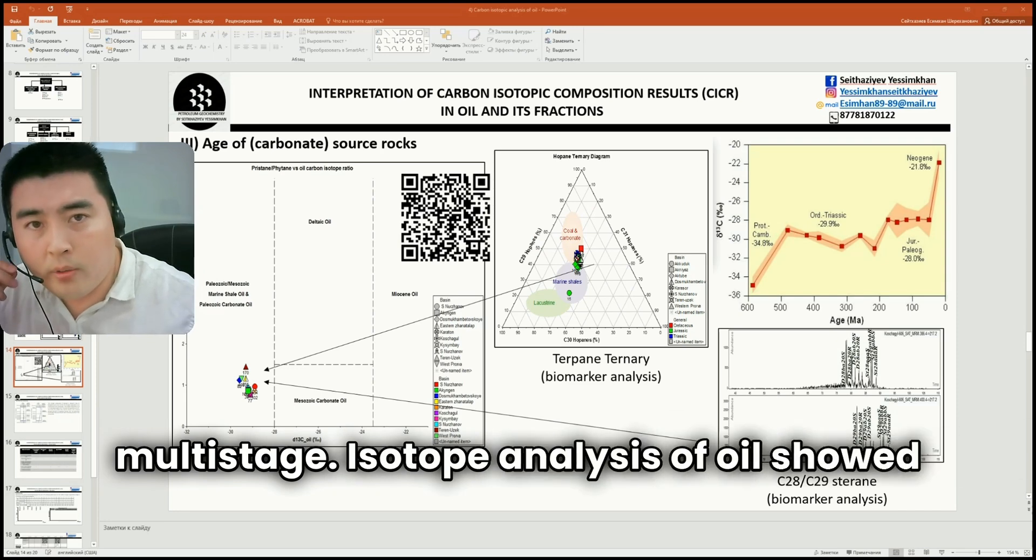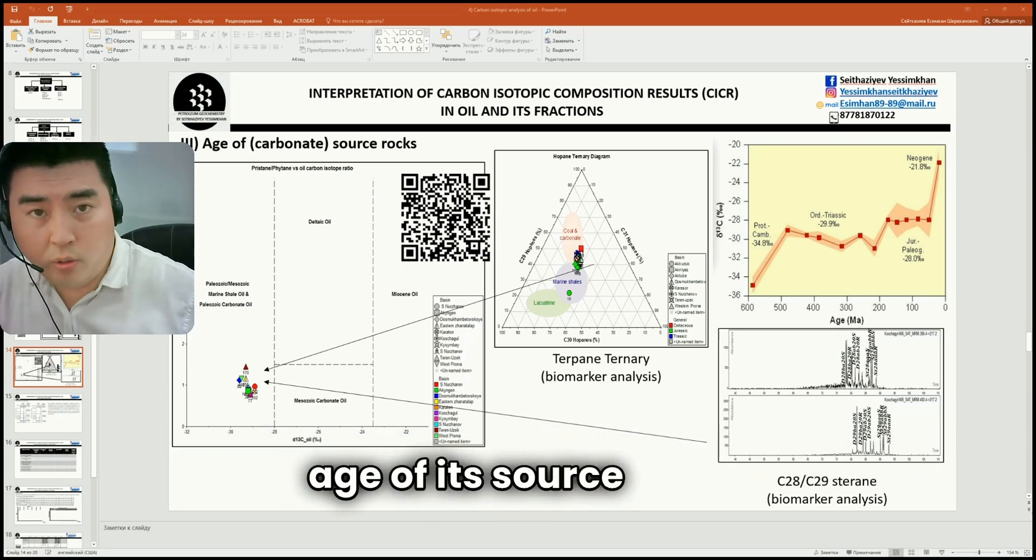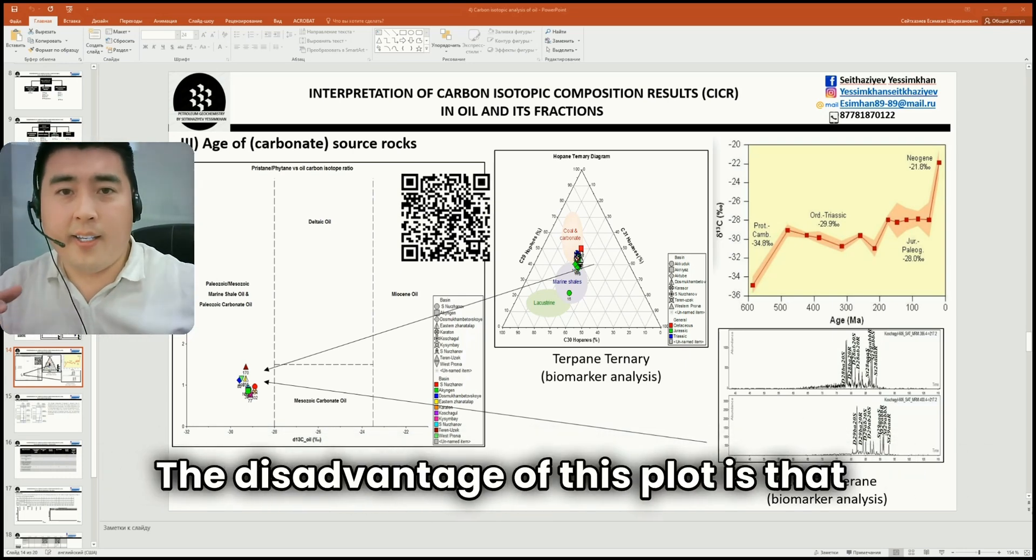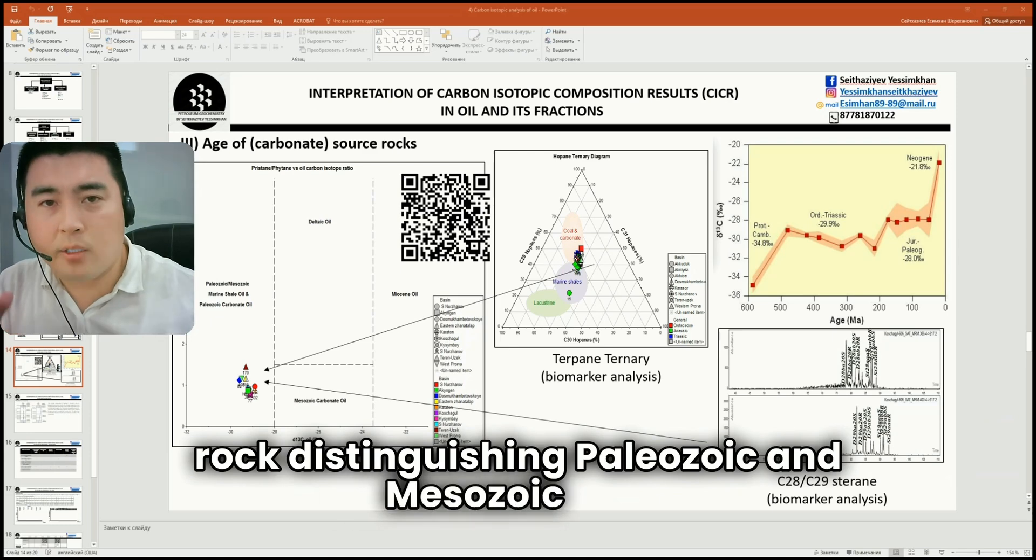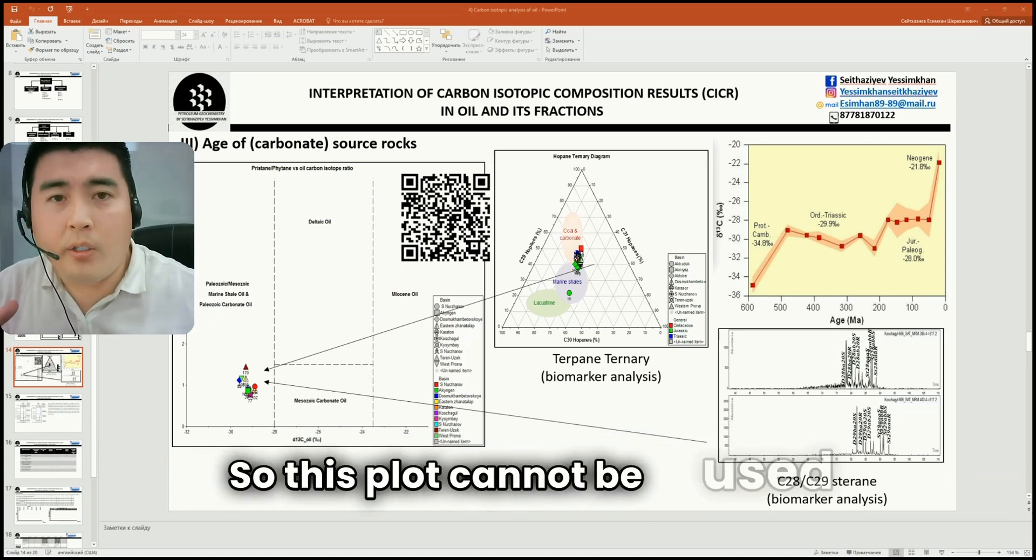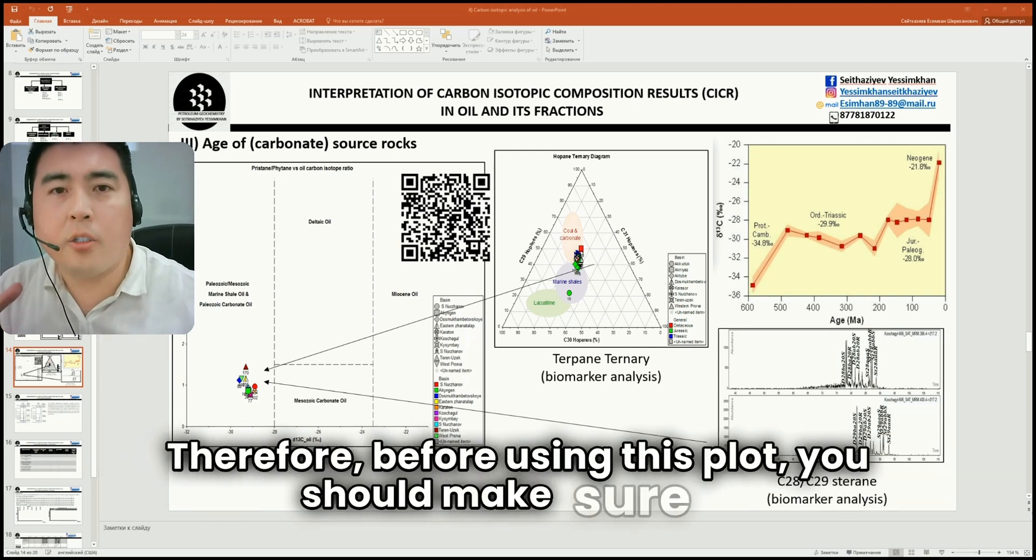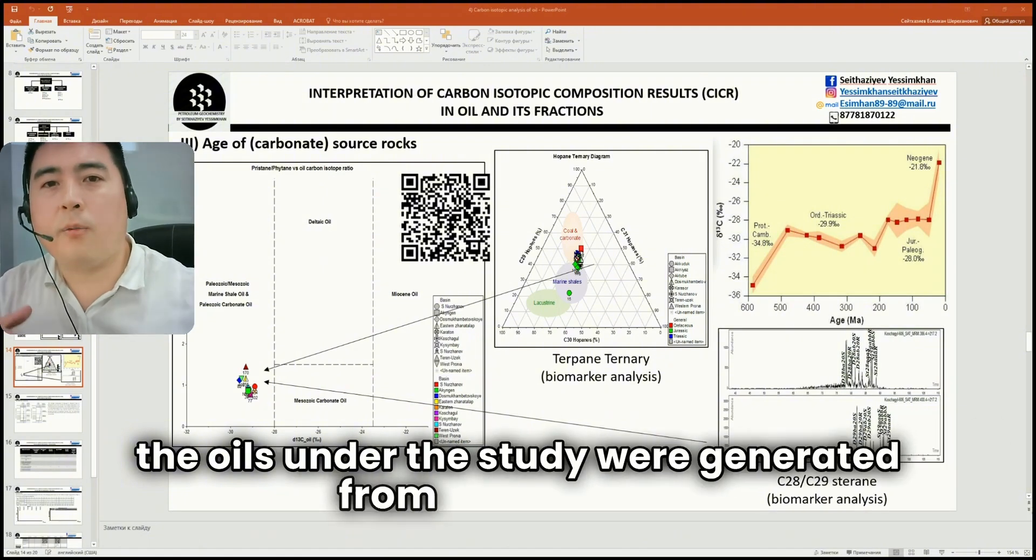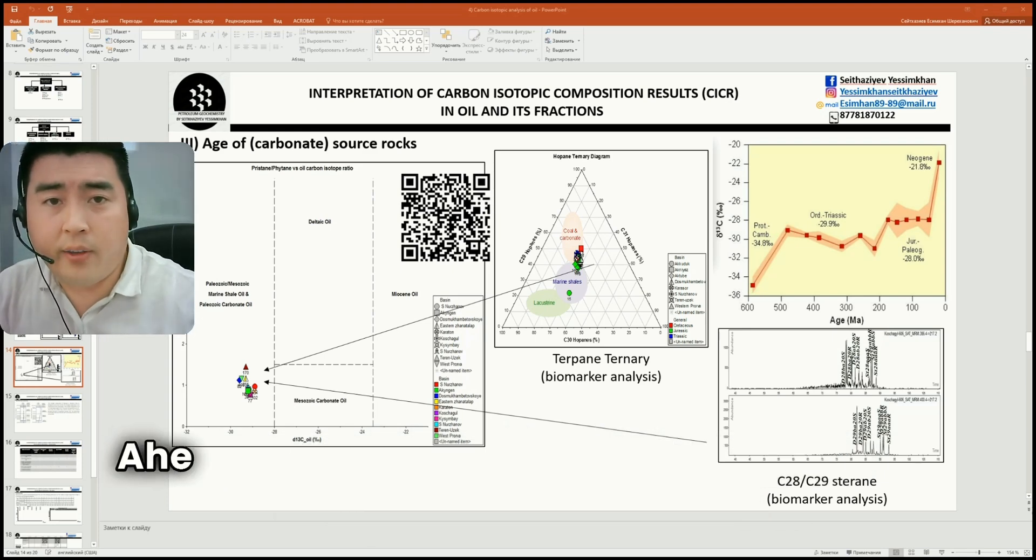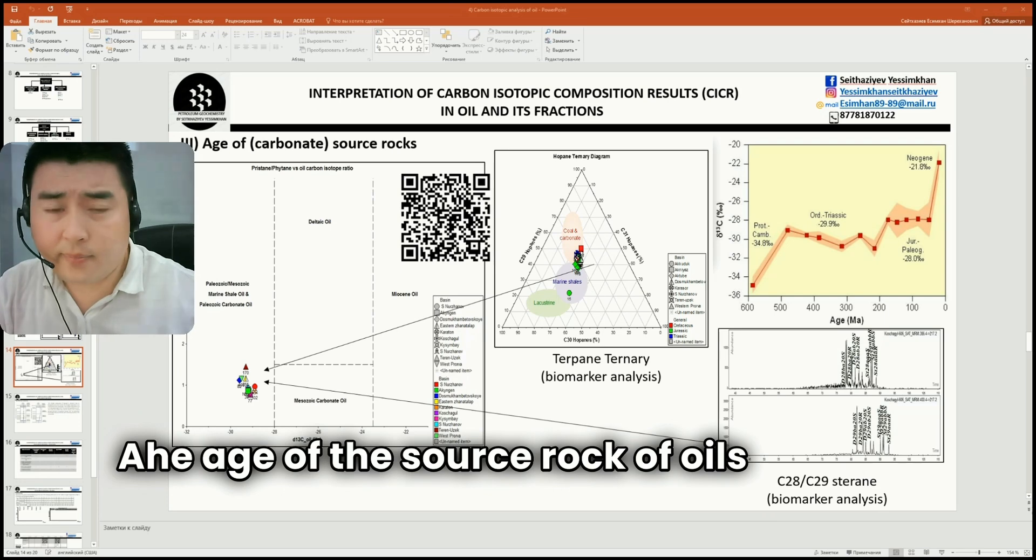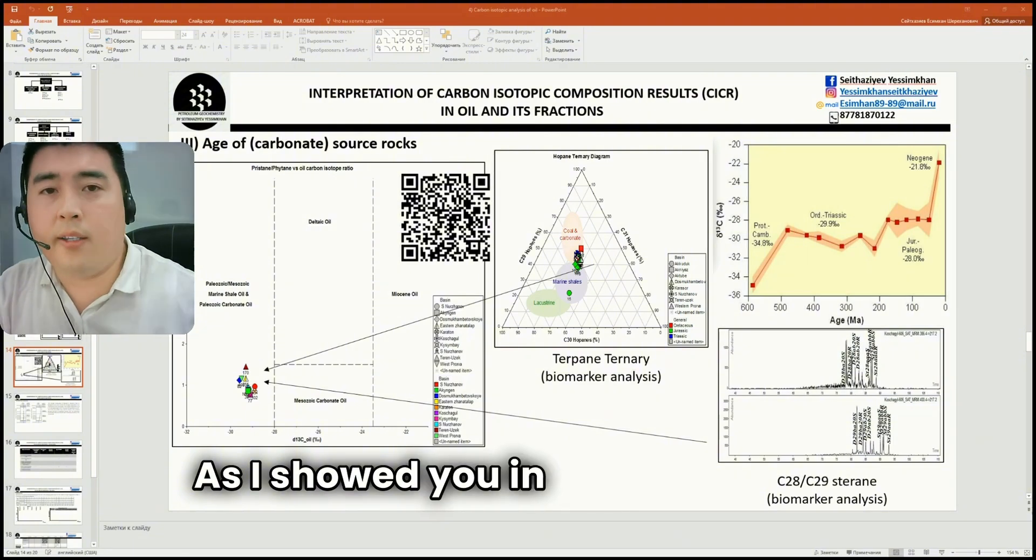Isotope analysis of oil shows a general tendency for the heavy carbon isotope to increase with the age of its source rock. The disadvantage of this plot is that it can only determine the age of carbonate source rock, distinguishing Paleozoic and Mesozoic oils. So this plot cannot be used for oils generated from shaly source rock. Therefore, before using this plot, you should make sure that the oils under study are generated from a carbonate source rock based on the biomarker analysis, as we did here. The age of the source rock of oils can also be determined based on biomarker composition of oil, as I showed you in the last lesson.